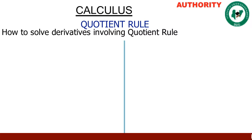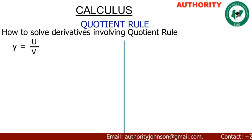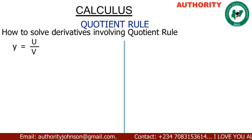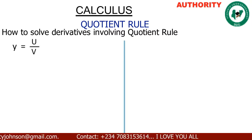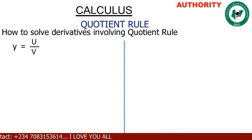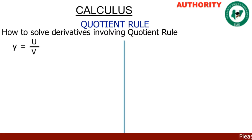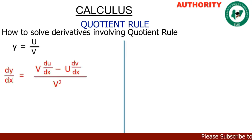When you have a function Y equal to U over V, or a function Y equal to U(x) over V(x), and you want to differentiate with respect to x, or find the derivative of Y, we write dY over dx.